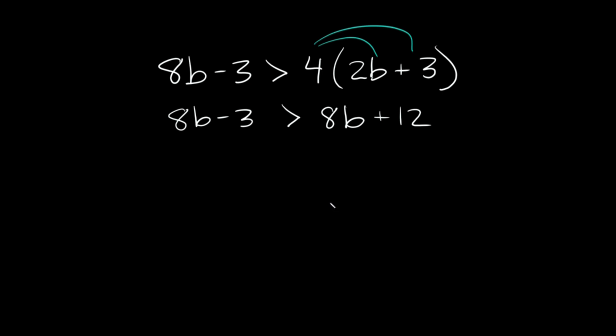Now, again, we're going to see something a little crazy. So moving all the b's to one side, let's move them to the left side. Here we have positive 8b, so we're going to subtract 8b from this side and from this side. So over here, they cancel out, and again, over here, they happen to cancel out. So then we're just left with negative 3 right here. Negative 3 is greater than positive 12.